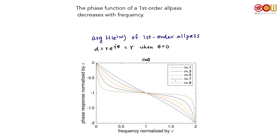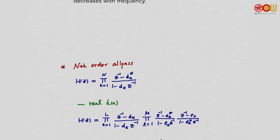For example, when theta = 0 the pole D is simply r. Plotting the phase function for r = 0.1, r = 0.3, and r = 0.9 shows that all curves are monotonically decreasing. For a general nth-order all-pass with real impulse response, we can express it as a product of first-order terms (with real poles/zeros) and second-order terms (with real coefficients).